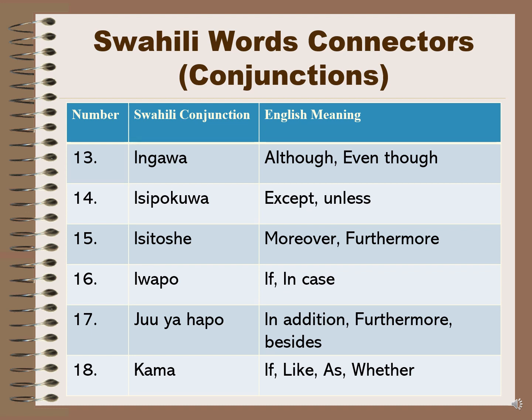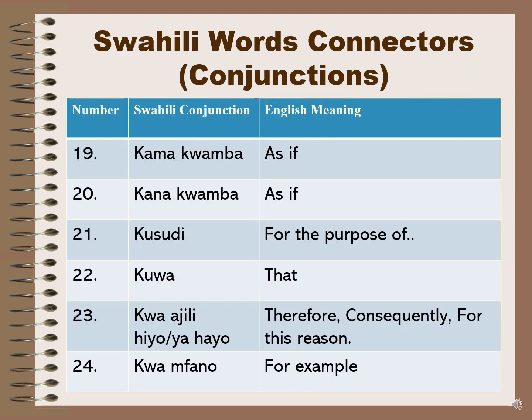Number eighteen: 'kama' means 'if', 'like', 'as', or 'whether'. Number nineteen: 'kana kwamba' meaning 'as if' — this can also be 'kama kwamba', also meaning 'as if'. Number twenty: 'kusudi' is 'for the purpose of'. Number twenty-one: 'kuwa' meaning 'that'. Number twenty-two: 'kwa hiyo' or 'kwa ajili ya hayo' which can be translated as 'therefore', 'consequently', or 'for this reason'.